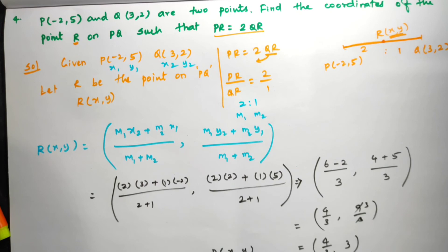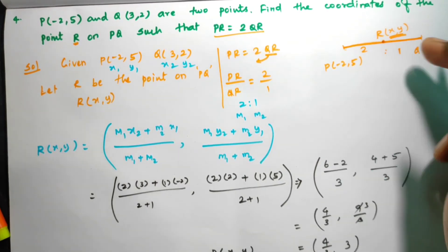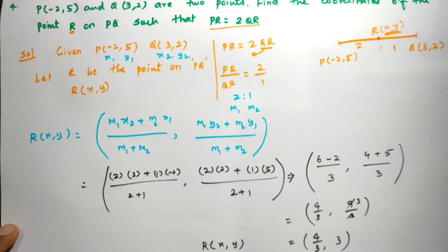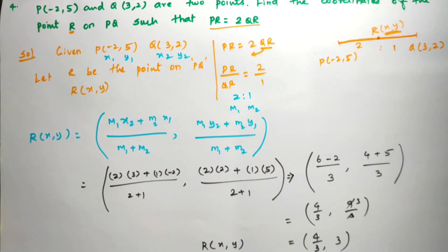R(x, y) = (4/3, 3) is the point of division. Point R divides the line segment in this ratio. Hope you understand this. If you have any doubt, please let me know in the comment section.